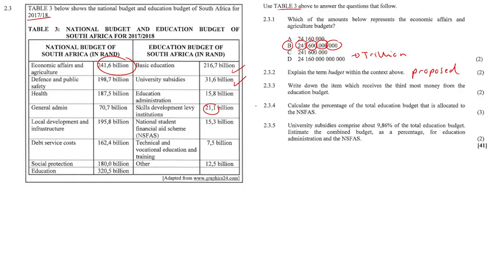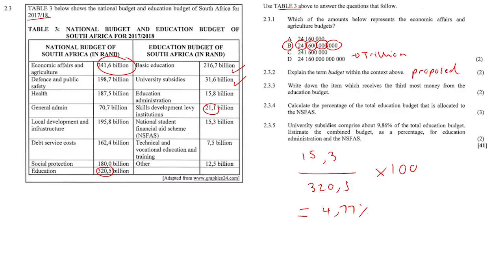Question 2.3.4: calculate the percentage of the total education budget allocated to NSFAS. The NSFAS amount is 15.3 billion. We put that over the total education budget of 320.5 billion and multiply by 100 to get a percentage, which gives us 4.77%.